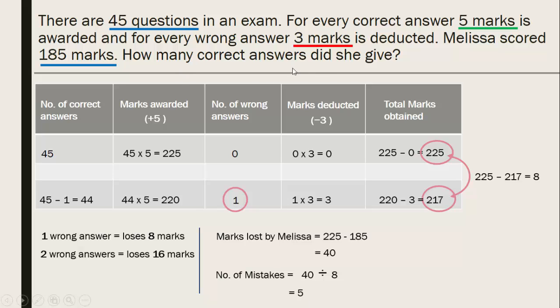Now, the question is how many correct answers did she give? So the mistakes is 5 and we know that the total number of questions is 45. So number of correct answers is 45 minus 5, which is 40.